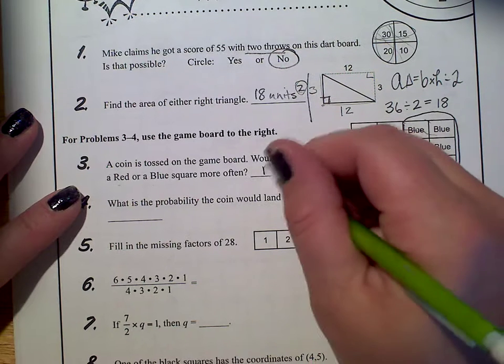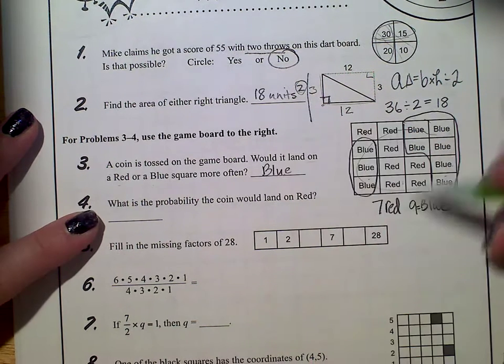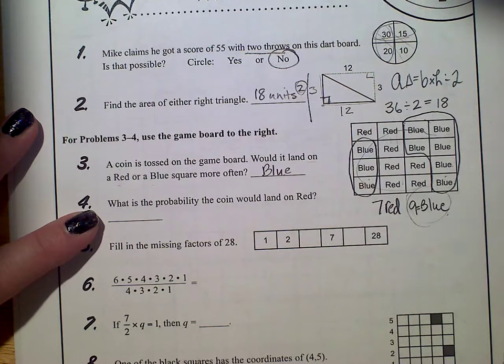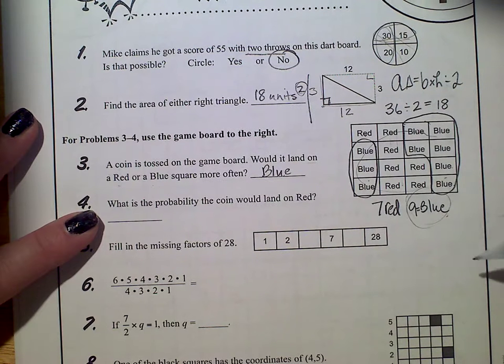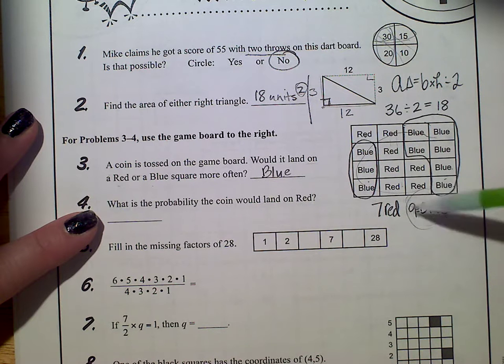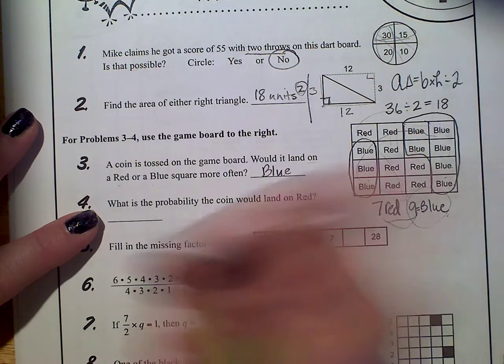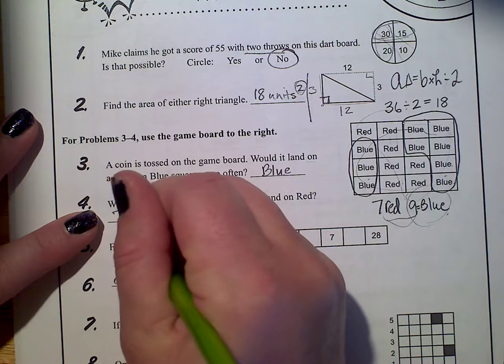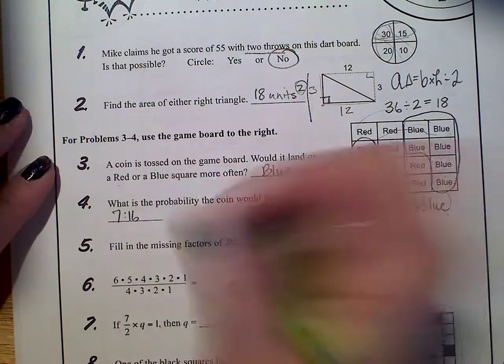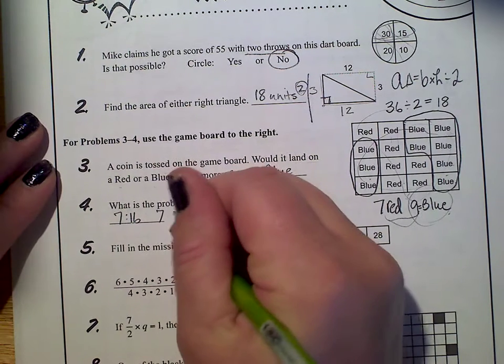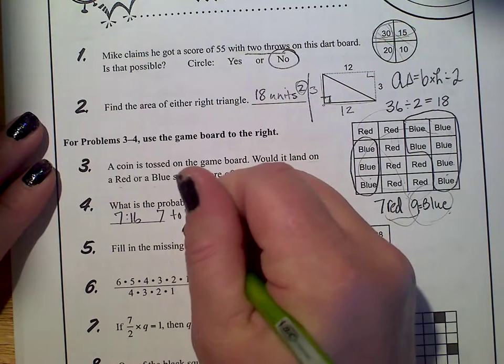So blue would be more squares that have the color blue on them. What is the probability the coin will land on red? So we're talking about landing on red out of all these. So we would add them together. So there's a total of 16. So you would have 7 out of 16 or 7 to 16 is the probability.